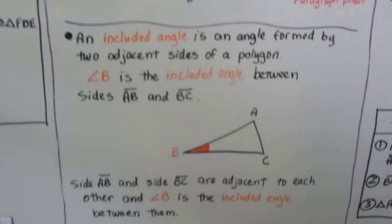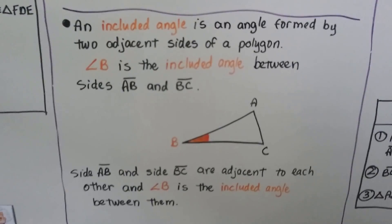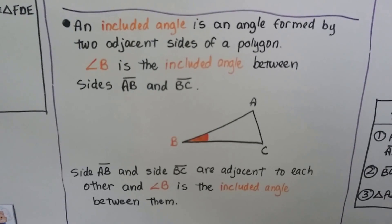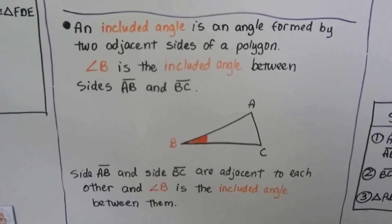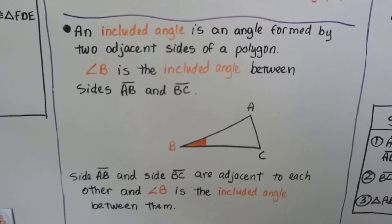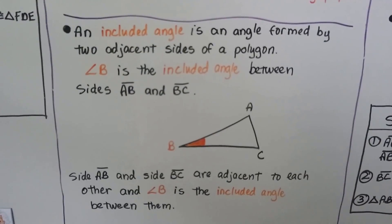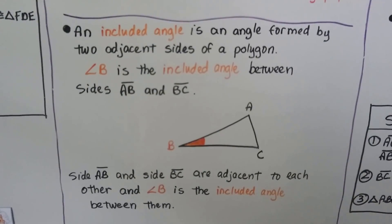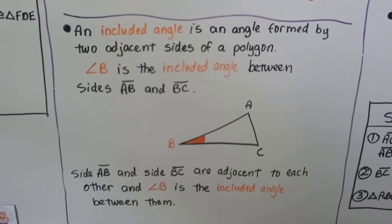An included angle is an angle formed by two adjacent sides of a polygon. Remember, adjacent means next to. So an included angle is an angle formed by two sides that are next to each other of a polygon.